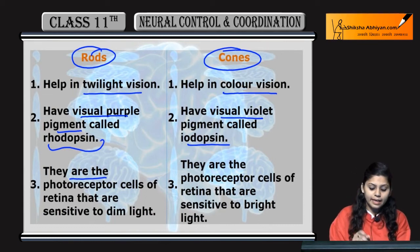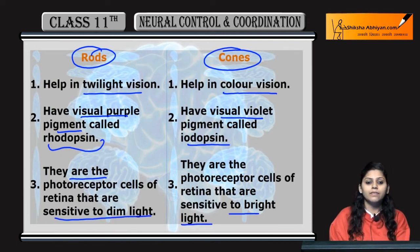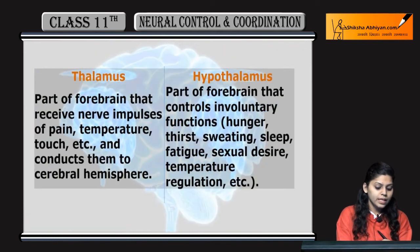Point 16: Rods are sensitive to dim light in the retina. Bright light ke liye sensitive are cones.